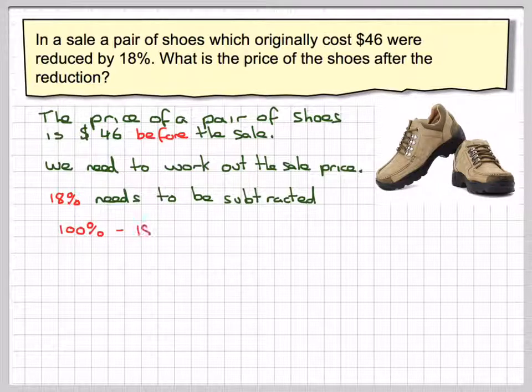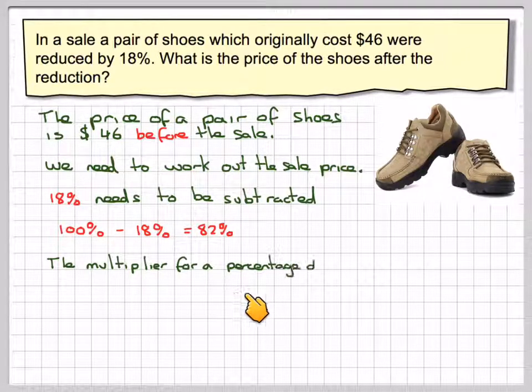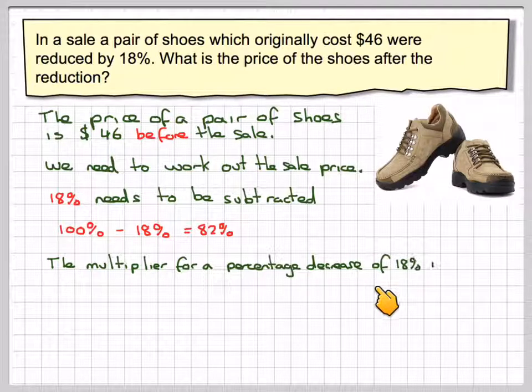We're going to have 100% take away 18%, which is going to leave us with 82%. The multiplier for a percentage decrease of 18% is 0.82.